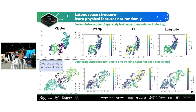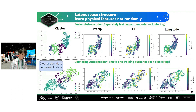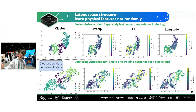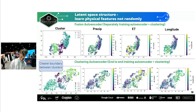When we map the high-dimensional bottleneck vector into two dimensions using dimensionality reduction techniques, we can see that precipitation and evapotranspiration form nice gradients, indicating that the learned representation reflects meaningful physical structure. For the end-to-end clustering autoencoder, the boundaries between clusters are clearer compared to the standard autoencoder, which is promising and suggests the additional clustering term helps the task.